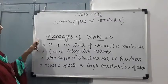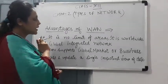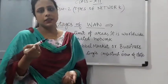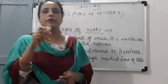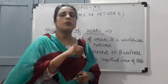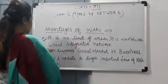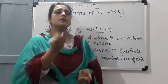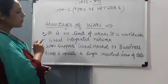Now we discuss advantages of WAN. There is no limit of area, so it is worldwide. We can use any city in any country. This is worldwide. There are MNCs with head offices in one city and corporate sub-offices in another city like Bhopal. The second advantage is global integrated network — this is globalization. We can use all the networks, which supports global market or business.